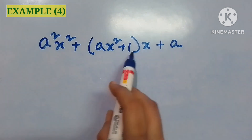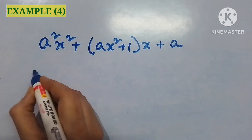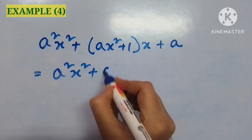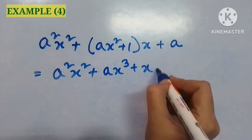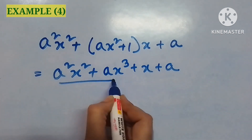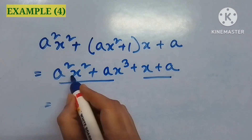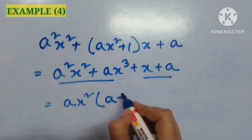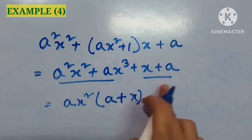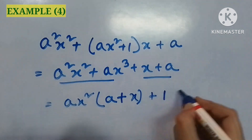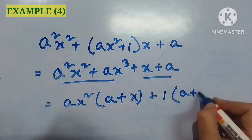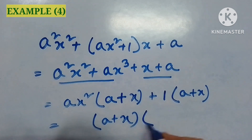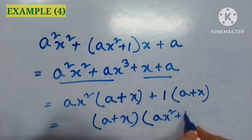In my fourth example: a squared x squared plus ax squared plus 1 times x plus a. I have to multiply x with the terms inside the bracket in my first step. Then from the first two terms I take ax squared as common, getting a plus x. From the last two terms I take one as common to get x plus a — both are the same. From both groups, a plus x is common, and this is the ultimate result for this example.